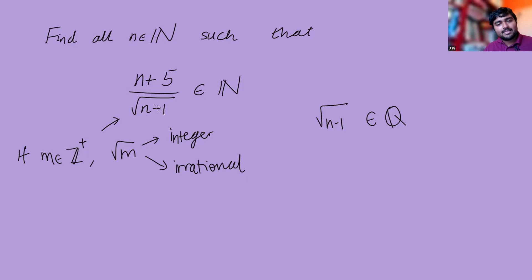So what this tells us is that since this denominator here is a rational number, and going by this fact, it therefore must be an integer. So root n minus 1 is some integer, and clearly it's going to be positive, because n minus 1 can't be 0, because otherwise this denominator would be 0. So root n minus 1 is a positive integer.